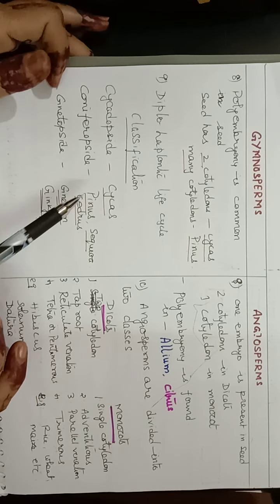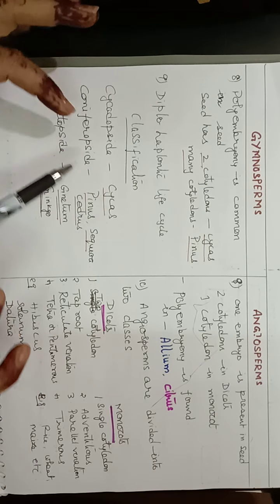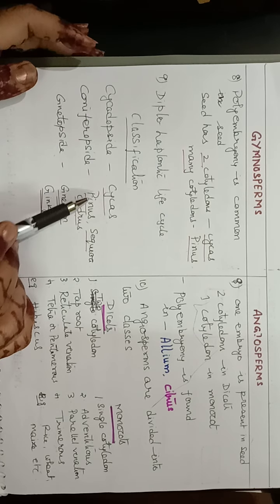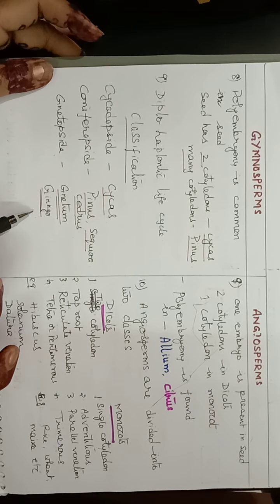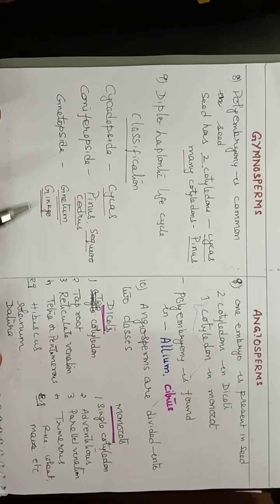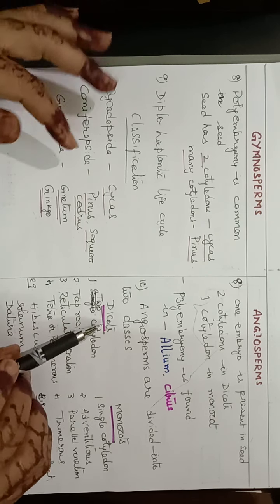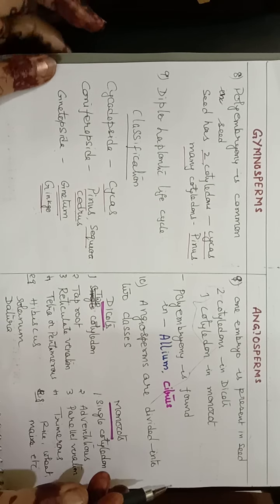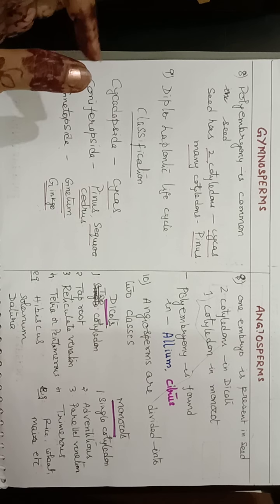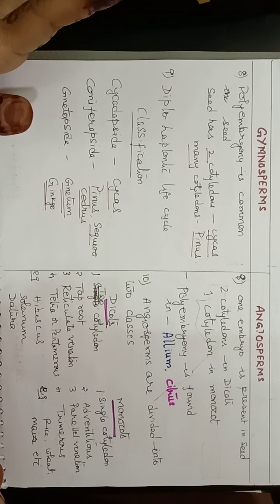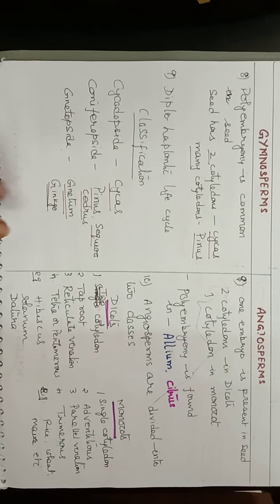For classification: gymnosperms are classified into three classes — Cycadopsida (e.g., Cycas), Coniferopsida (e.g., Pinus, Sequoia), and Gnetopsida (e.g., Gnetum, Ginkgo). Angiosperms are divided into two classes — dicots and monocots — further divided into many families. In Bentham and Hooker's classification, there are 202 families total, with only three belonging to gymnosperms and 199 to angiosperms.